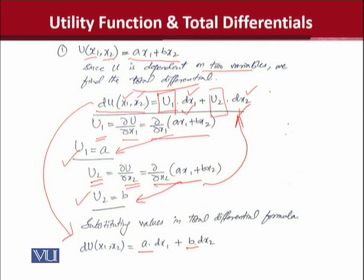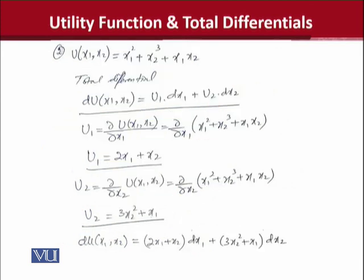Now, we'll consider another case to do the same thing and see how the total differential can help us when it comes to the analysis of a utility function. As you can see now the function has become slightly complex because there are cube terms, square terms, and also the product of both variables. However, the total differential formula will remain the same.